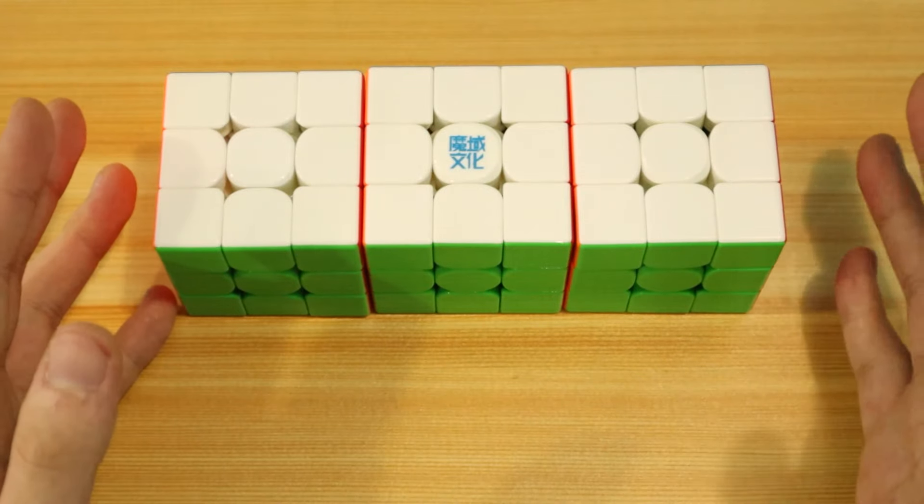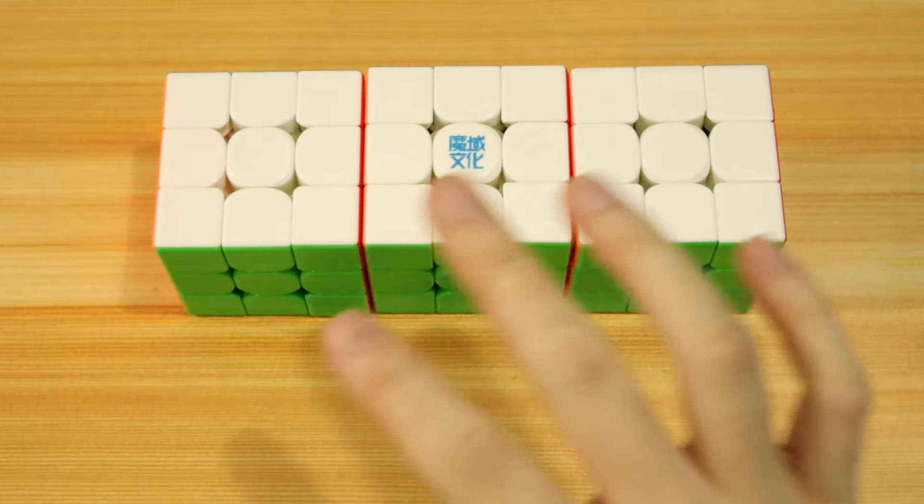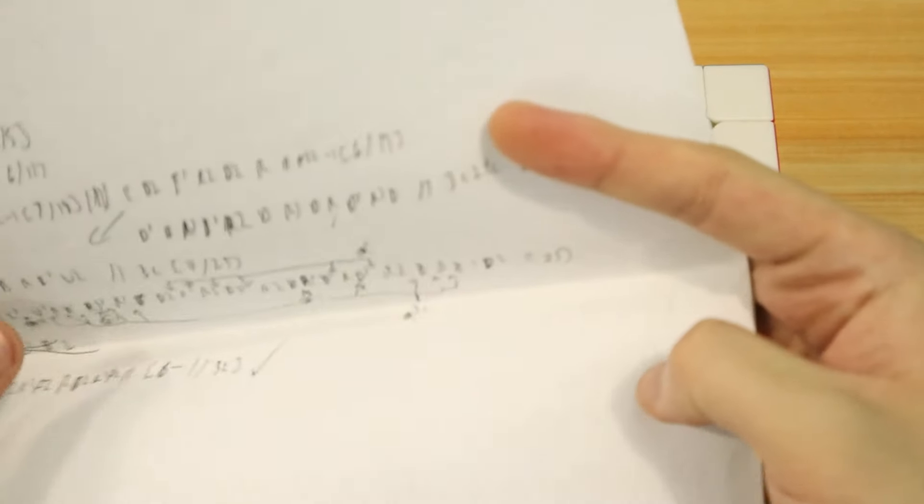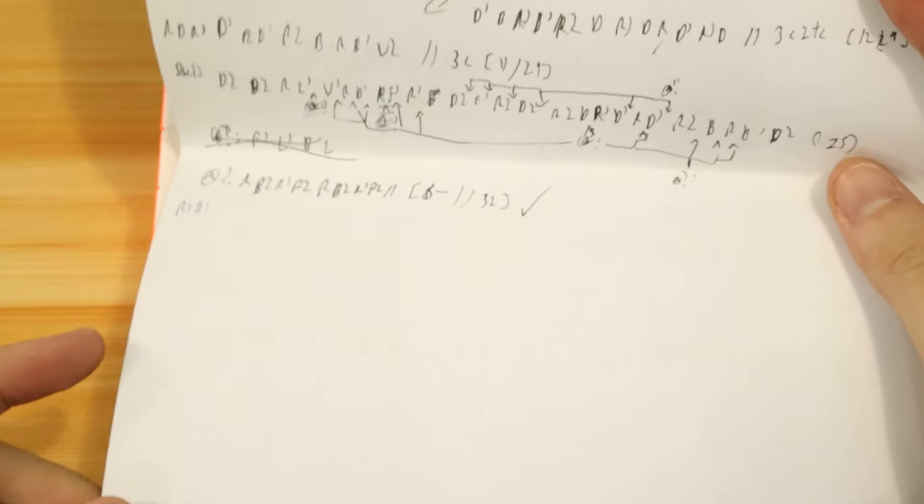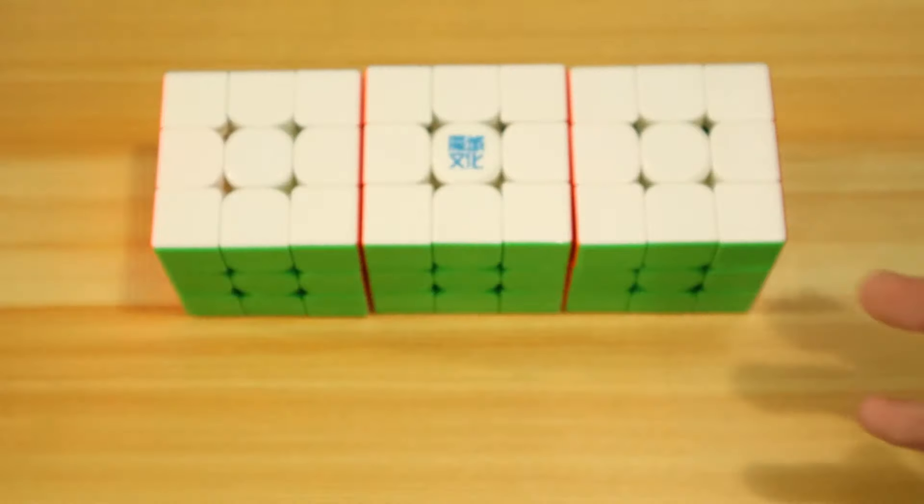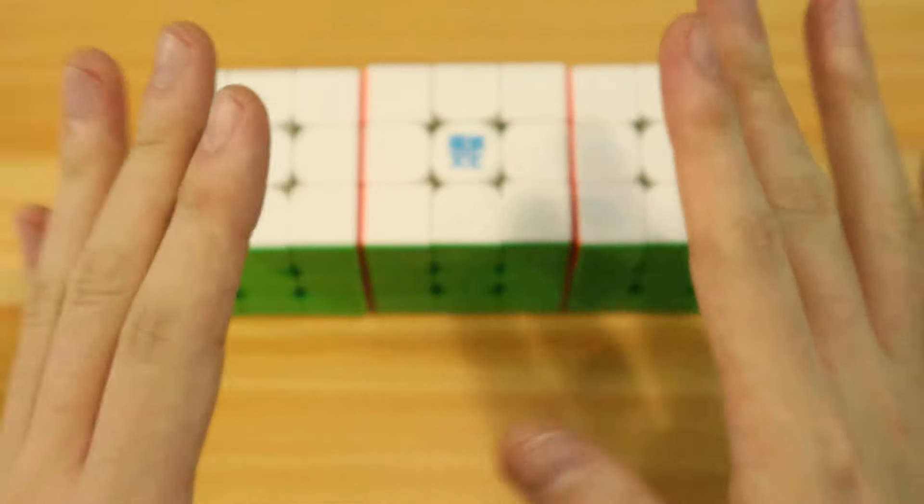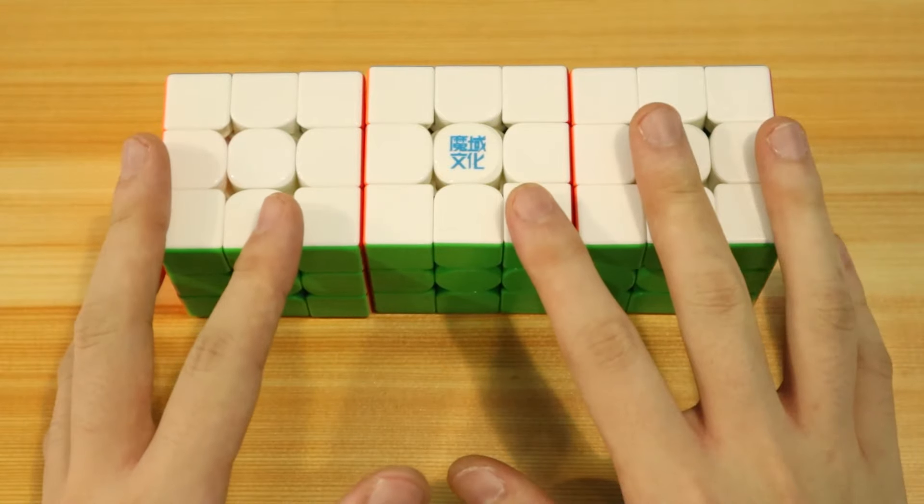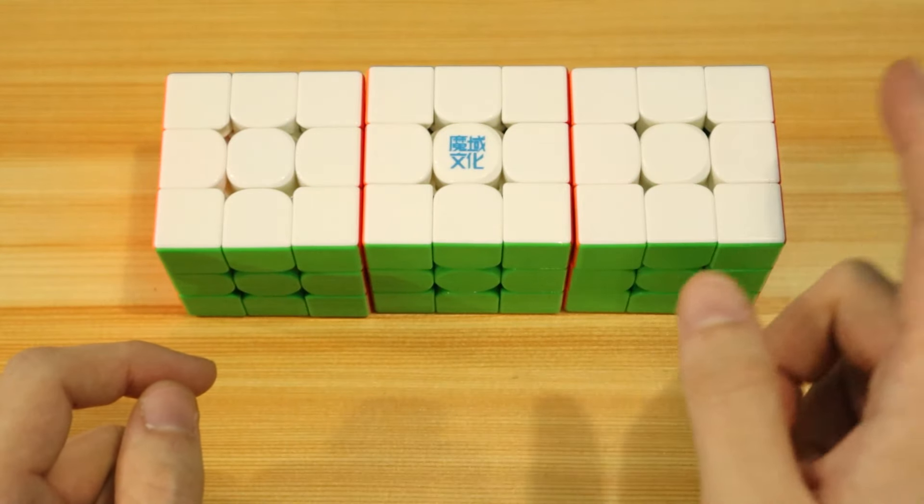I was only then able to debut FMC in 2024 with UPB meet at Diliman. I debuted with a 32 single, but the rest of the solves are just not as remarkable. So at that point, that single was actually pretty good for me, but I was hoping to at least get sub-30 somewhere in the future.